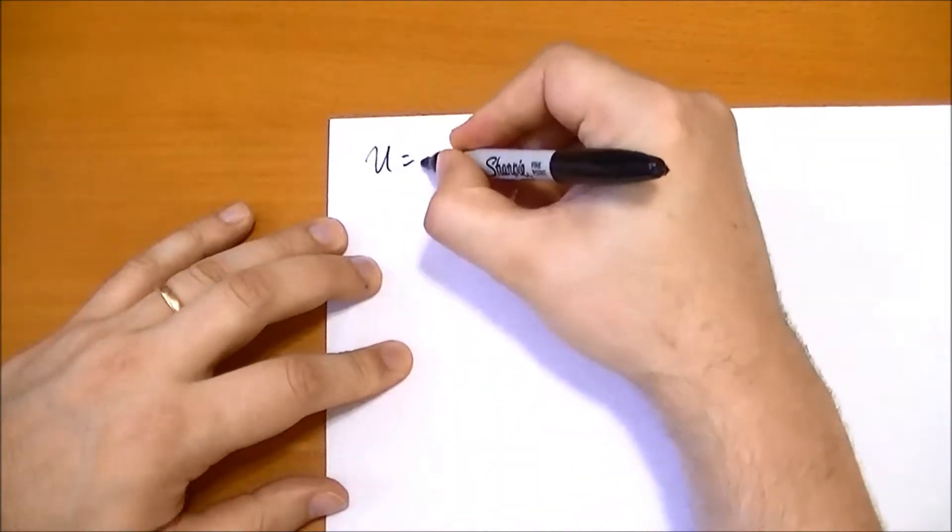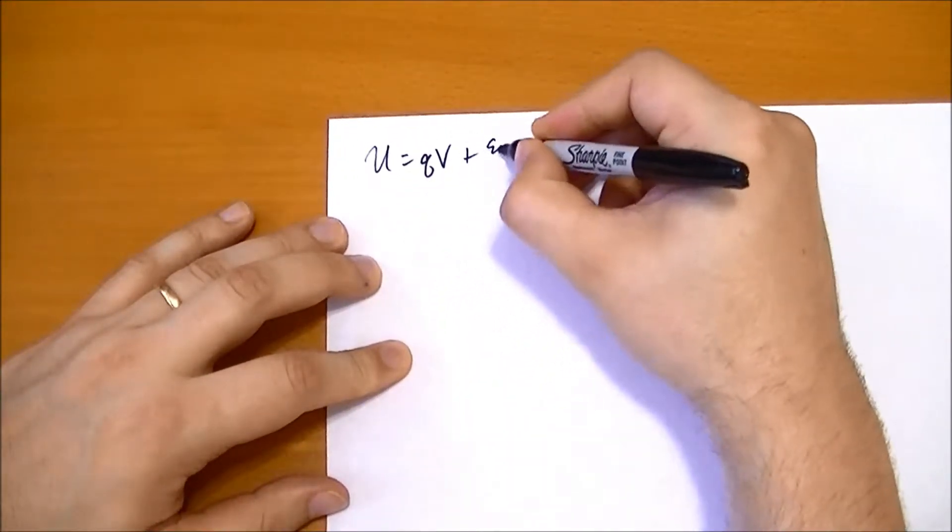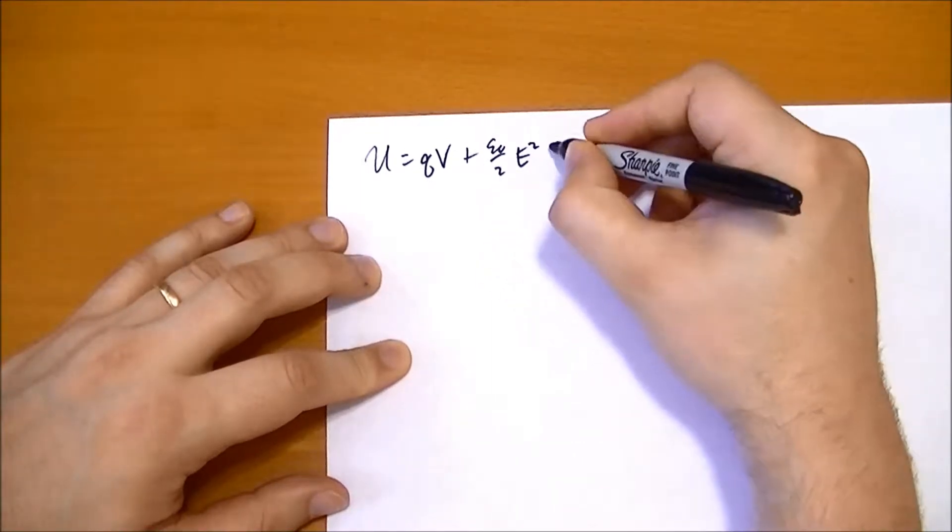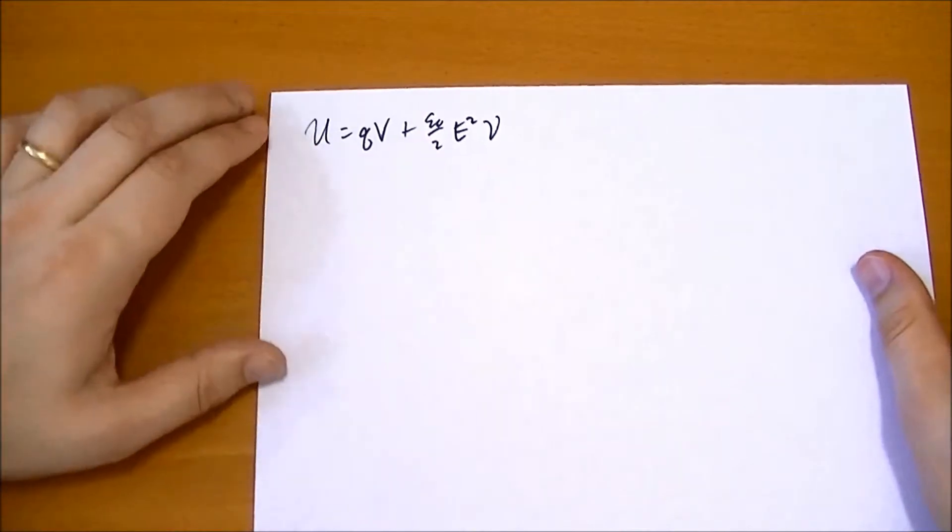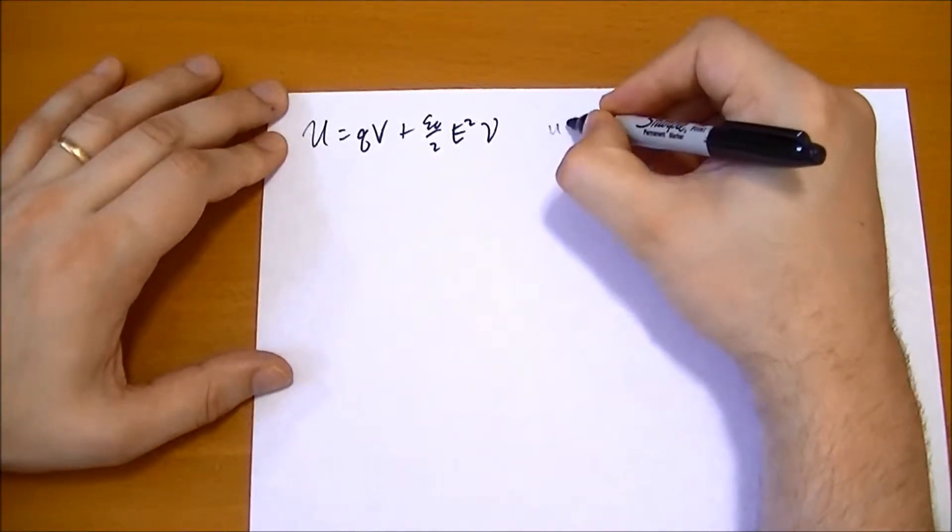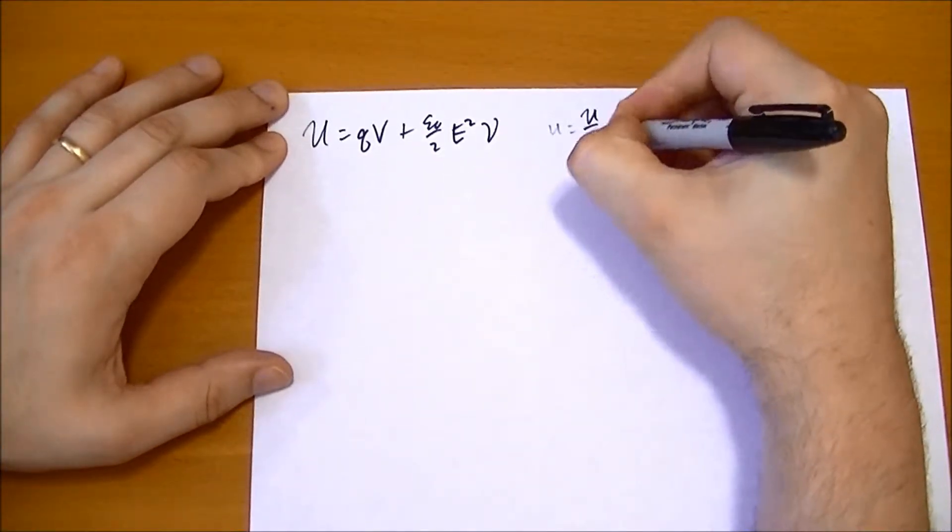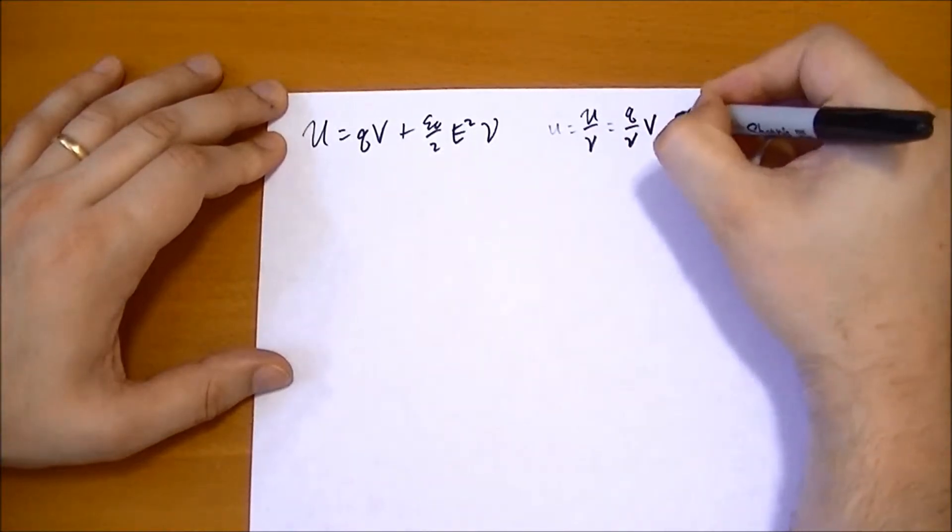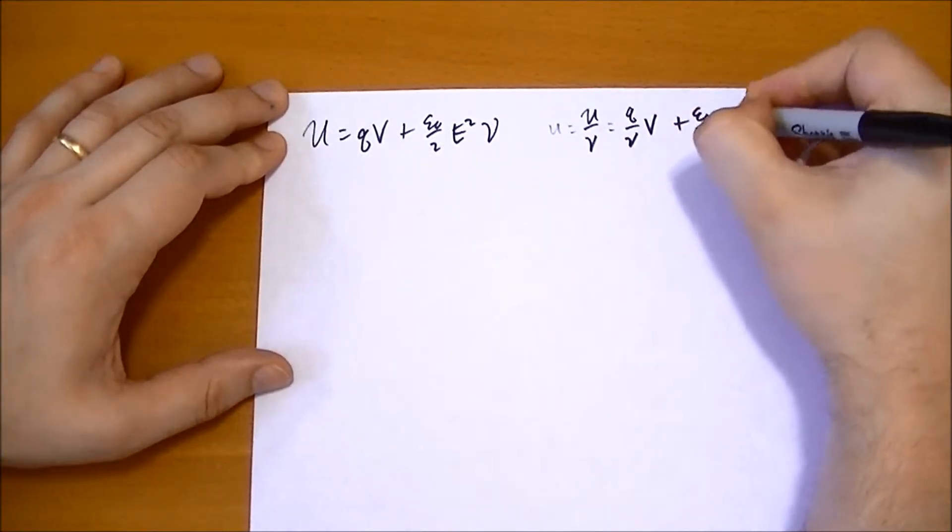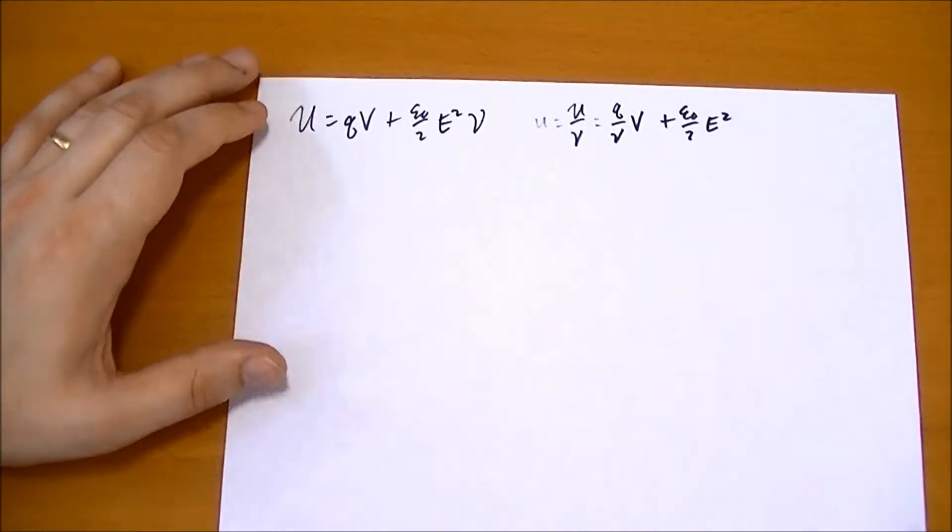The first thing we know is that in an electric field, a charged particle has energy u equals qv plus epsilon naught over 2 times the electric field squared over that volume. If we want to look at the small u, which is basically big u divided by the volume, then we get the charge density times the potential plus epsilon naught over 2 times e squared.